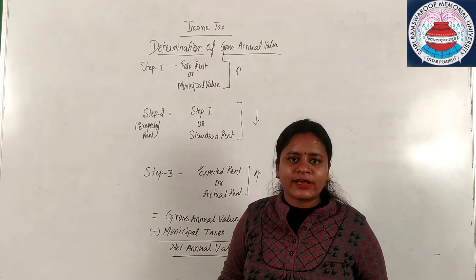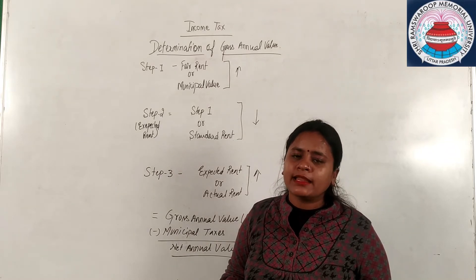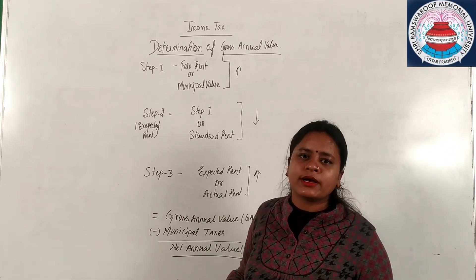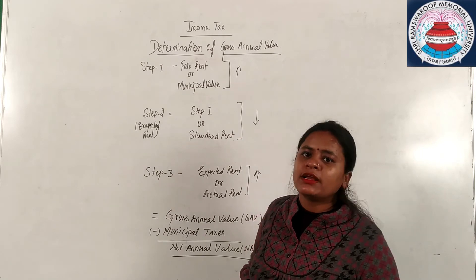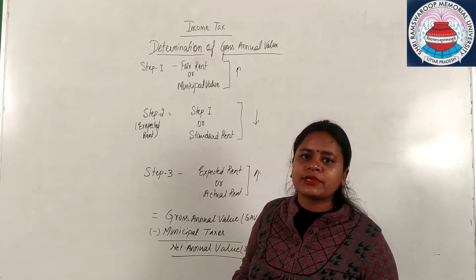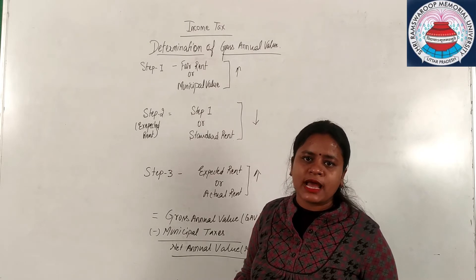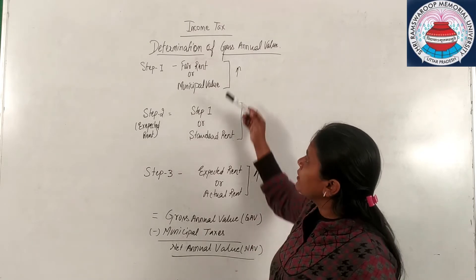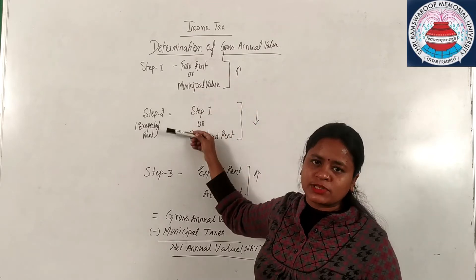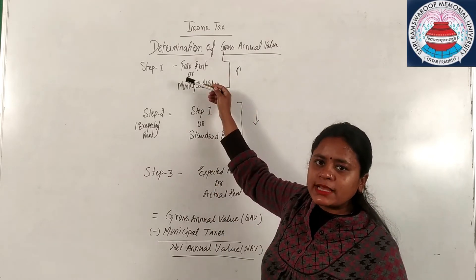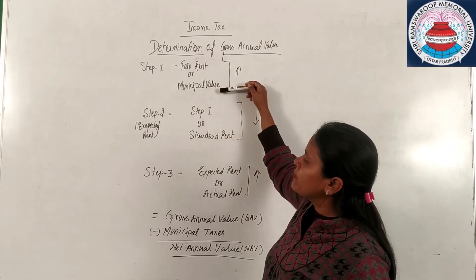So we have five sources of income and today we are going to learn about house property. In this we are going to calculate the determination of gross annual value. In gross annual value we have three steps. In first step we have fair rental value and municipal value.